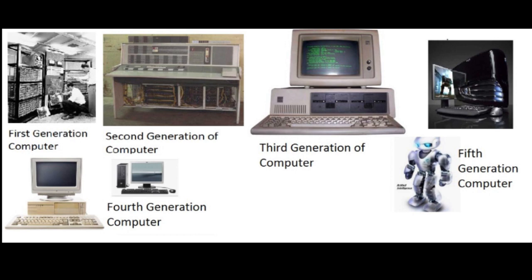The evolution of this complex system started around 1940 with the first generation of computers and has been evolving ever since. Did the computer we use today come on the same day? No, there are many generations behind it. Today we will talk about these generations. There are five generations of computers: first, second, third, fourth, and fifth generation.